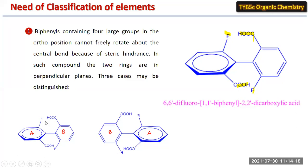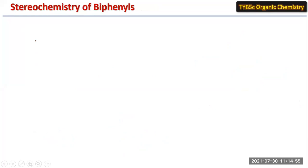The steric hindrance produced by the various groups at the ortho position restricts rotation over the pivotal bond. Due to this restricted rotation, the molecule can show different types of isomers, which are called atropisomers and exhibit optical activity. Now let us consider some examples of optical activity in biphenyl systems.